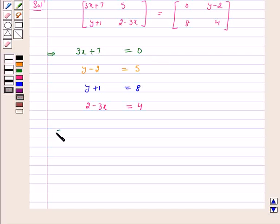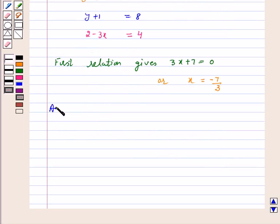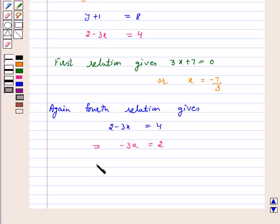So, what relation gives? First relation gives 3x plus 7 is equal to 0 or x is equal to minus 7 by 3. Again, fourth relation is 2 minus 3x is equal to 4 which implies minus 3x is equal to 2, that is x is equal to minus 2 by 3.